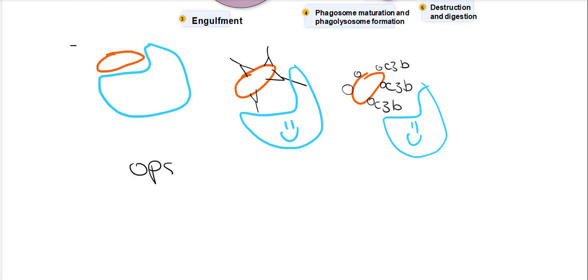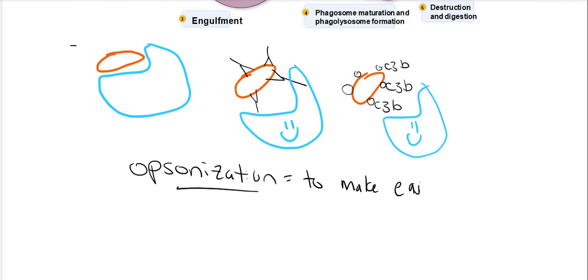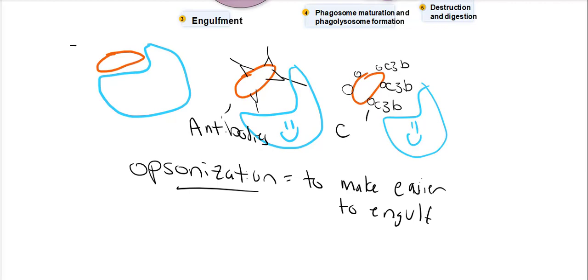This process is called opsonization — a fancy word that means the phagocyte can more easily engulf the pathogen, so it makes it easier to engulf. There are two ways that opsonization can occur: either by antibodies attaching to the pathogen or complement protein C3B attaching to the pathogen.